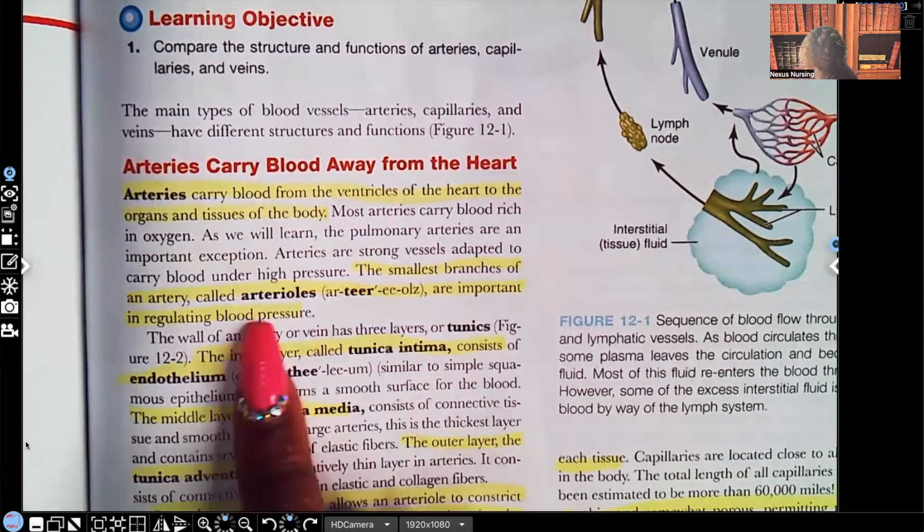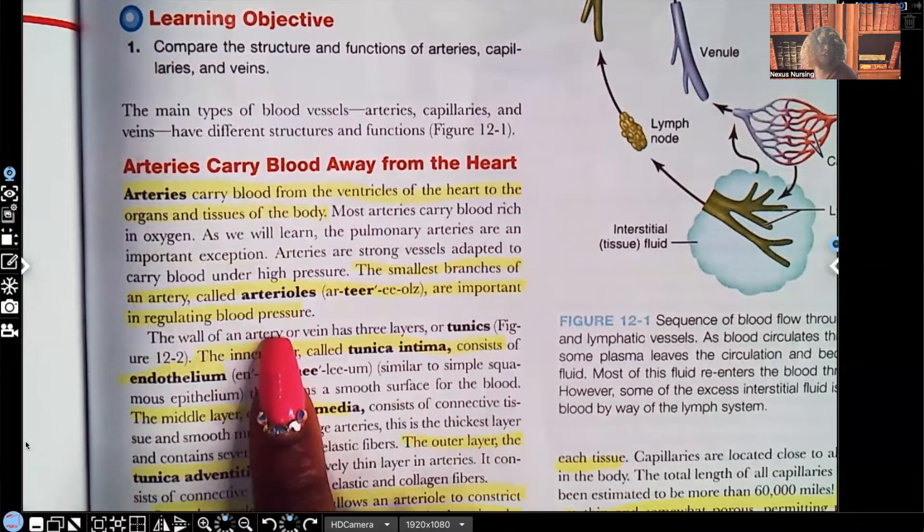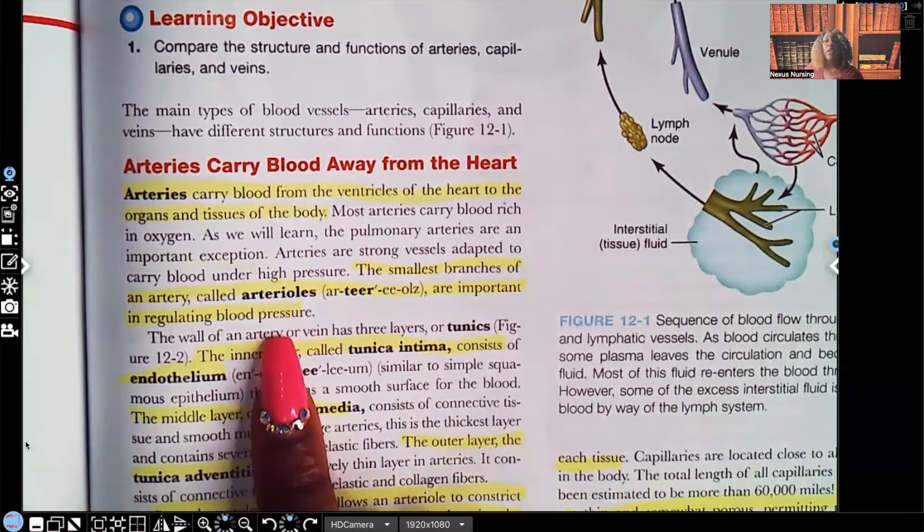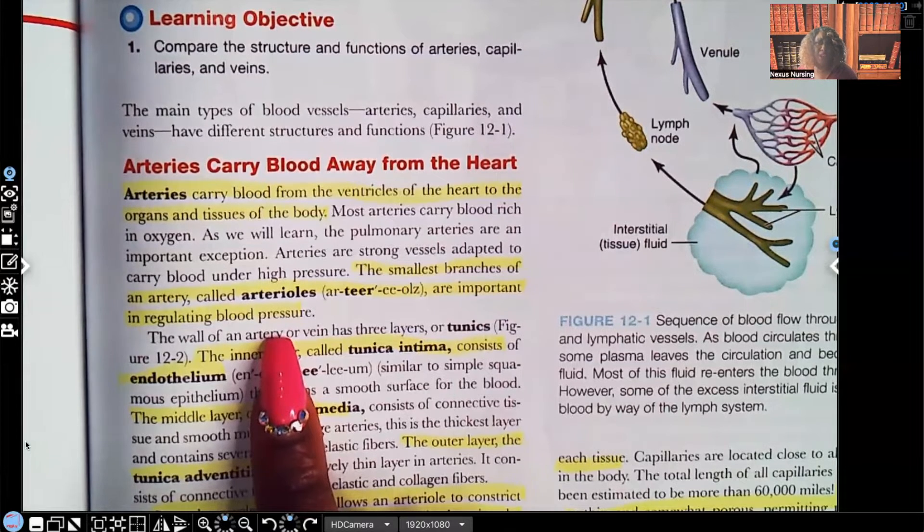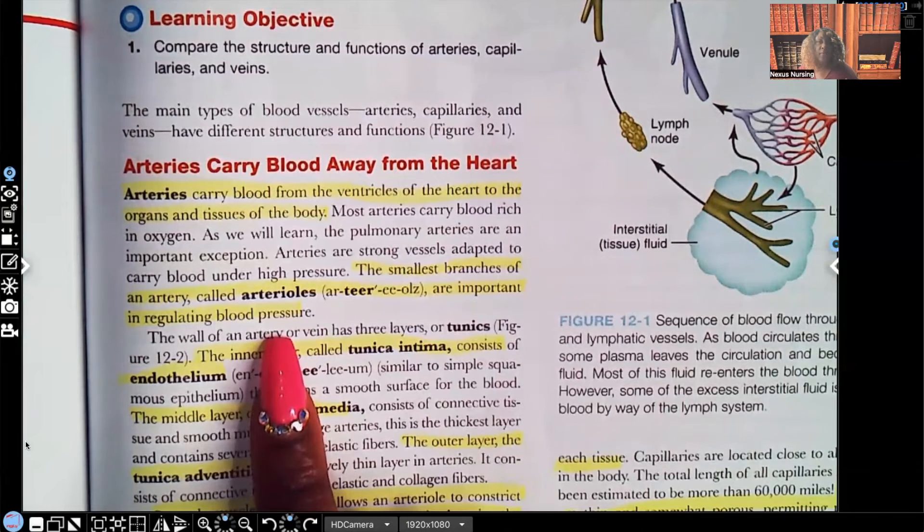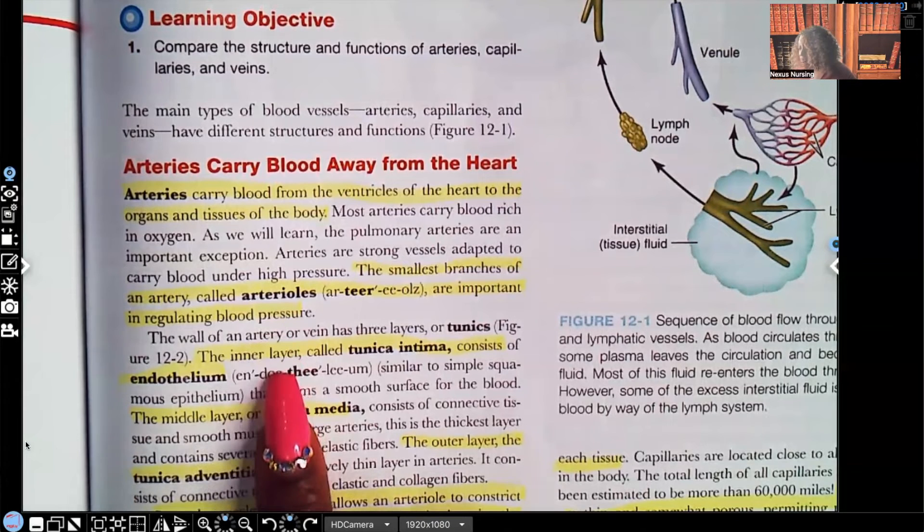The smallest branches of the artery, this is what's known as arterioles, and they're important in regulating blood pressure. And the way that they're important in regulating blood pressure, guys, they can actually constrict or they can dilate. So if the patient's blood pressure is already too high, what do you think they're going to do? They're going to dilate to slow down that blood pressure. And if the blood pressure is too low, what do you think they're going to do? They're going to constrict to bring that blood pressure up. So those arterioles are very important when it comes to regulating blood pressure.